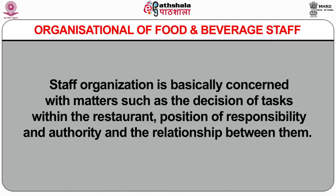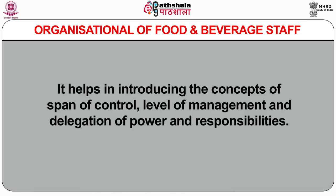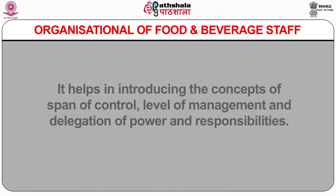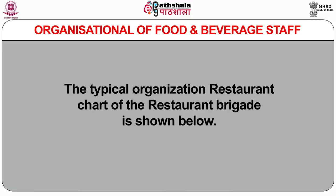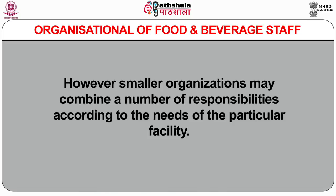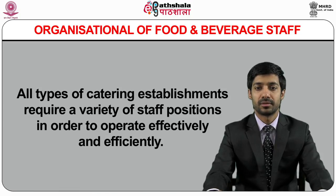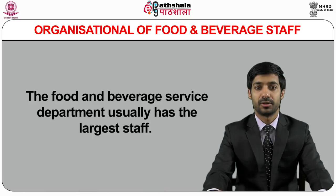Staff organization is basically concerned with matters such as the division of tasks within the restaurant, position of responsibility, and authority and the relationship between them. It helps in introducing the concepts of span of control, level of management, and delegation of power and responsibilities. The typical restaurant brigade chart is discussed in this chapter as well. Smaller organizations may combine a number of responsibilities according to the needs of the particular facility. All types of catering establishments require a variety of staff positions in order to operate effectively and efficiently. The food and beverage service department usually has the largest staff.